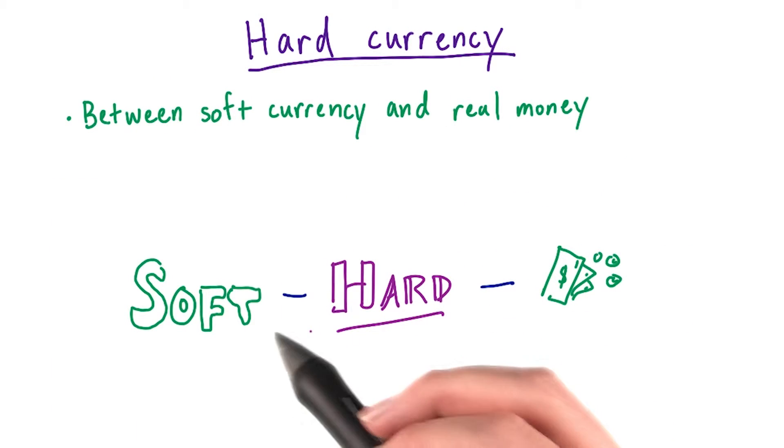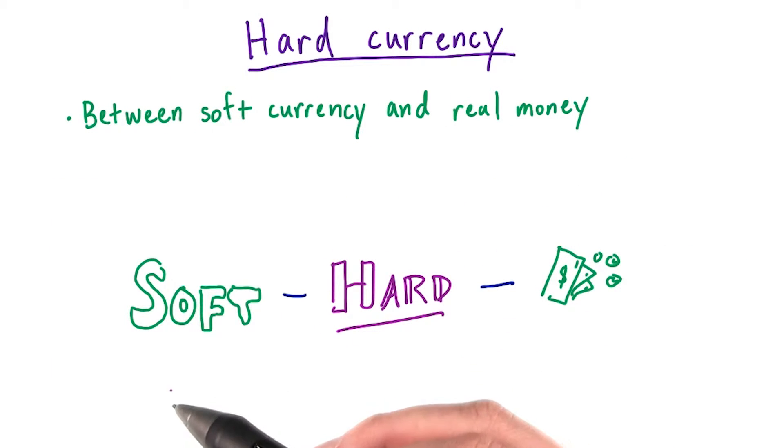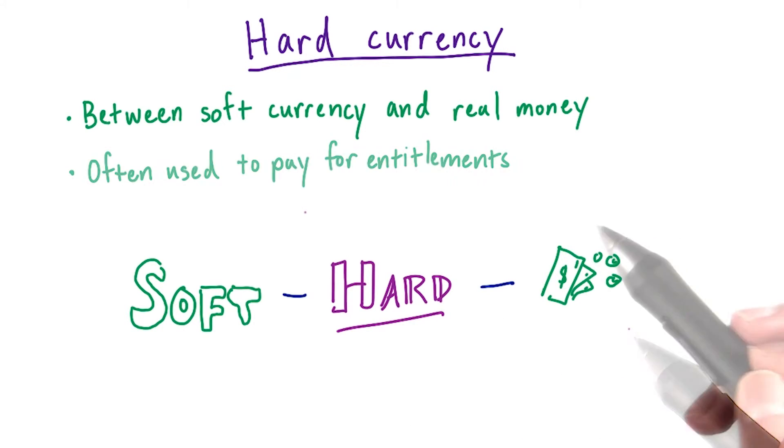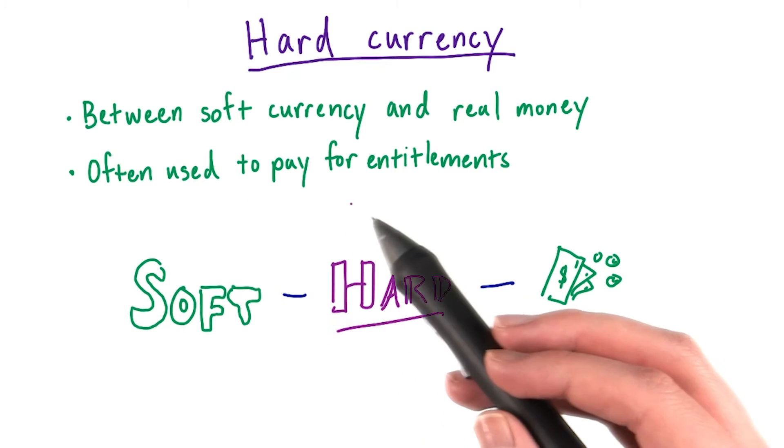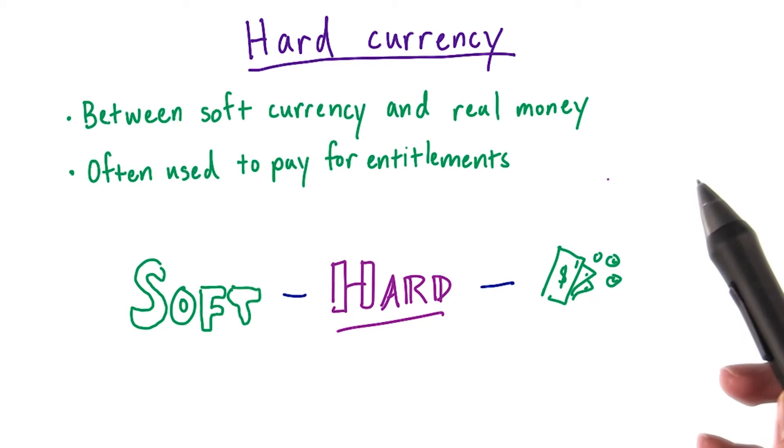Hard currency is between real money and soft currency. It's difficult to earn and can also usually be bought with real money. Like we mentioned before, it's often used to pay for entitlements or other rare items.